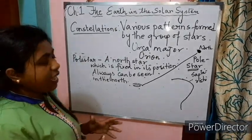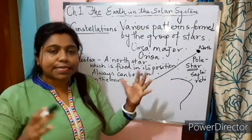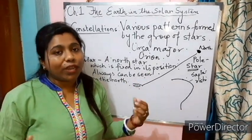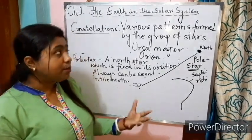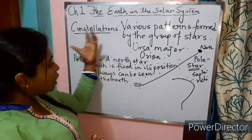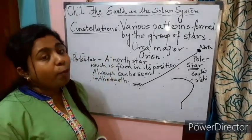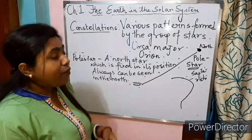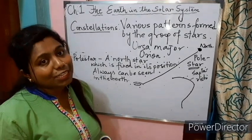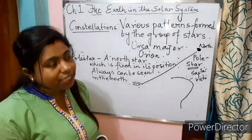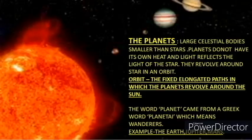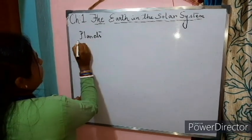So, what we have learnt so far: we learnt about celestial bodies, we learnt about stars, we learnt about constellations, and we learnt about the pole star. Now let us go ahead with another celestial body — that is planets.